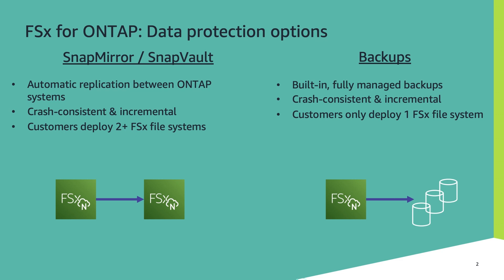SnapVault is also a NetApp ONTAP technology, but it is more of an archiving technology. It stores snapshot copies, whether or not they currently reside in the source file system. It is very much applicable in times of audit when you need access to historical data. You can keep monthly snapshot copies of your data for over a 20-year span, depending on your business regulatory requirements. SnapMirror retains the most recent copies of your data, and SnapVault retains the copies for a longer period of time.